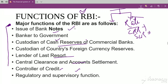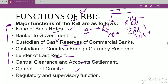Regarding the issue of bank notes: RBI, under Section 22 of the RBI Act, has the right to issue currency notes of all denominations except the one-rupee coin and notes. One-rupee notes and coins are issued by the Ministry of Finance. All other notes are issued by RBI.